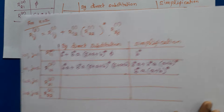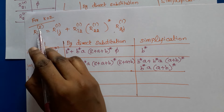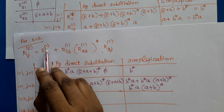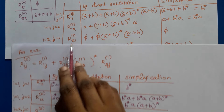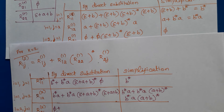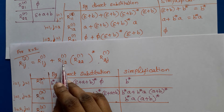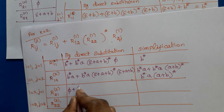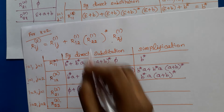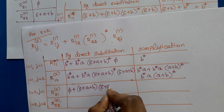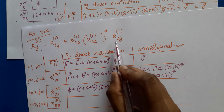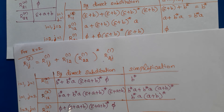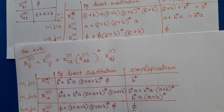For r21 to the power 2, i is 2 and j is 1. Substituting: r21^1 is phi, plus r22^1 which is epsilon plus a plus b, concatenated with r22^1 star (epsilon plus a plus b star), concatenated with r21^1 which is phi. Since phi concatenated with any expression is phi, and phi plus phi is phi, the result is phi. So r21 to the power 2 is phi.